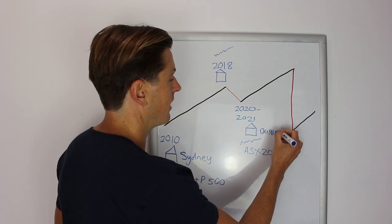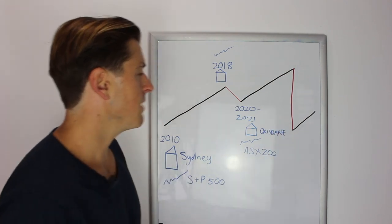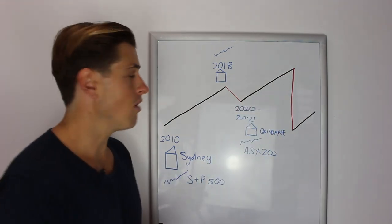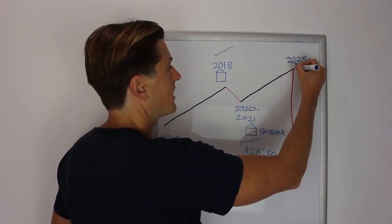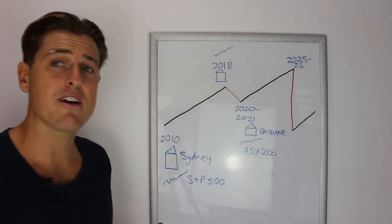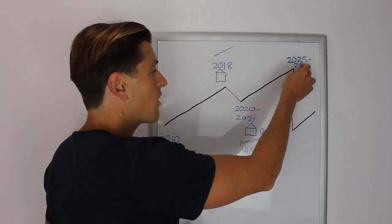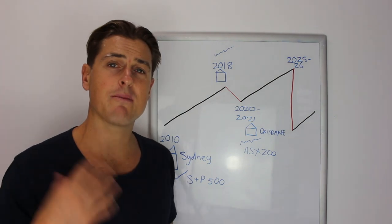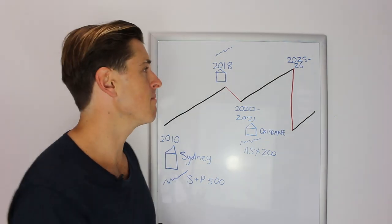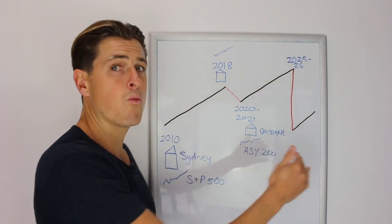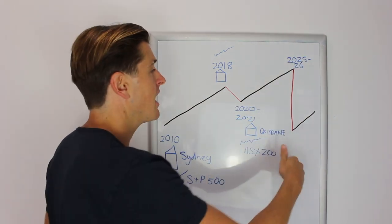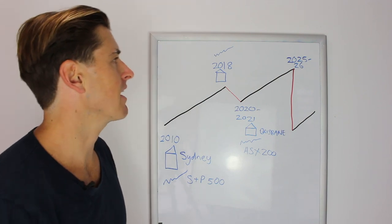The plan here could be to buy these properties and hold them to the top of the market somewhere between 2025 and 2026 according to Phil Anderson and Fred Harrison. Again, instead of going through a major decline which is going to be much more severe than what we're seeing at the moment, you decided to exit them, wait for the bottom one, two, three years later, and then get yourself back into the market.